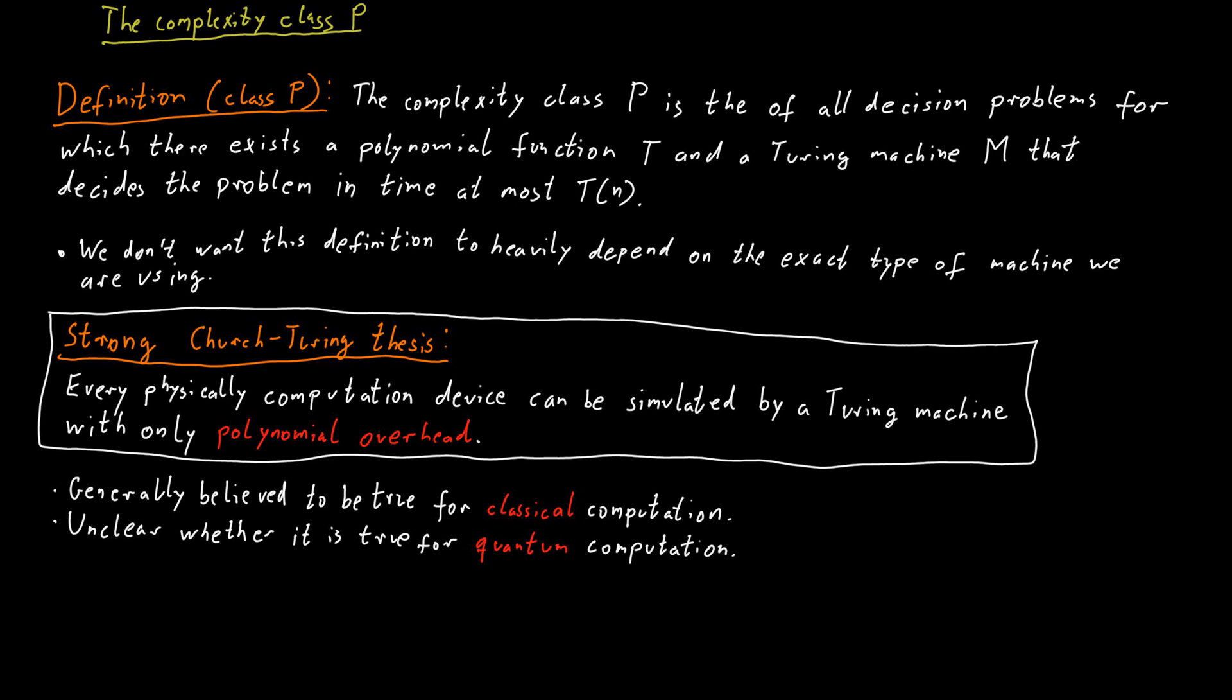Certainly all the different variants of Turing machines we have discussed, like Turing machines with multiple tapes for example, can be simulated by a standard Turing machine. Not only in principle, but the simulation can even be done efficiently. And the simulations I told you about were in fact efficient simulations. Some of them had a linear slowdown, some had a quadratic slowdown, but all of them had at most a polynomial slowdown.